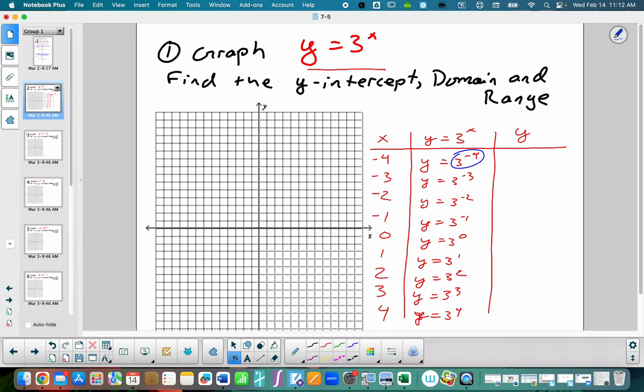So when you do this, 3 to the negative 4th power, I'd prefer you having that decimal. It'll be easier to graph if we get a very small number. We get 0.0123. Try it, make sure that you get that. We do the same thing for negative 3, and that's going to be 0.037. 3 to the negative 2nd power is 0.1 repeating. 3 to the negative 1st is 0.3 repeating. 3 to the 0 is 1, 3 to the 1st is 3, 3 to the 2nd is 9, 3 to the 3rd is 27, and 3 to the 4th is 81.